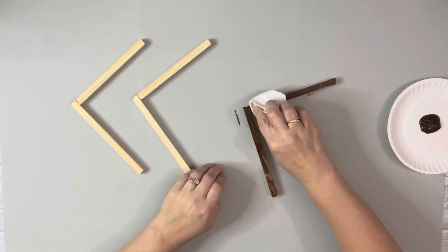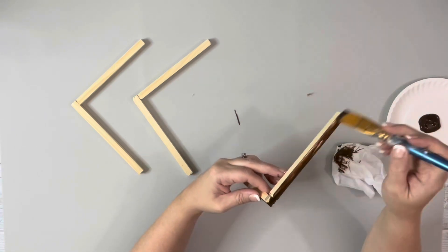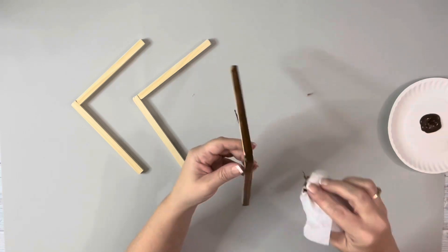Then I took Gel Stain from Hobby Lobby in the color Walnut, brushed that on each of my dowel sets, and took a baby wipe to blend it in.